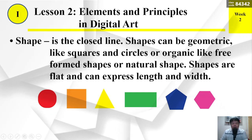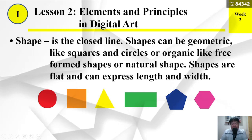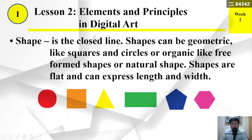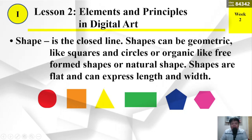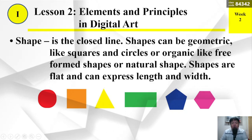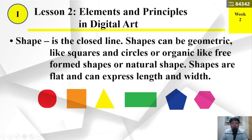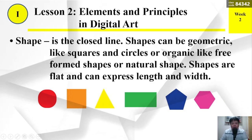Shape is the closed line. Shapes can be geometric like squares and circles, or organic like free-form shapes or natural shapes. Shapes are flat and can express length and width.